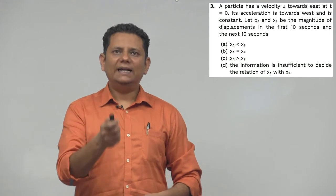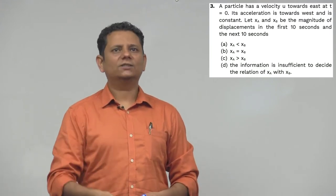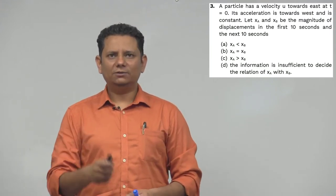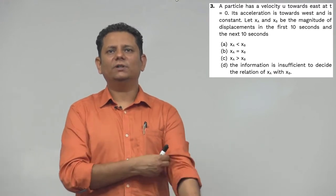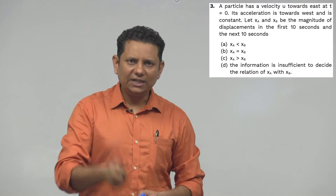Next question. The question says a particle has a velocity u towards east at t equals zero. Its acceleration is towards west and is constant. Let xa and xb be the magnitude of displacement in the first 10 seconds and in the next 10 seconds.